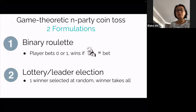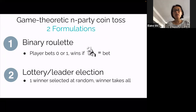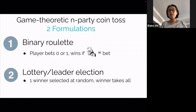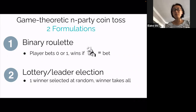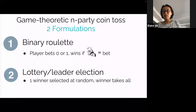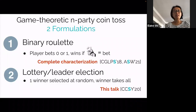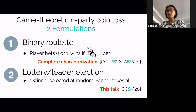There are actually two formulations for game-theoretic multi-party coin toss, and both are very natural. In the first formulation, think of it as binary roulette: every player bets on either 0 or 1, and if their bet matches the outcome they win—imagine everyone puts down one ether to enter, and all winners divide the pot. In the second formulation, it's more like a lottery and it's the same as leader election: we have N players, we elect a winner at random, and the winner takes the pot. In a couple of other papers we gave a complete characterization of the first definition—essentially when it's feasible and when it's not.